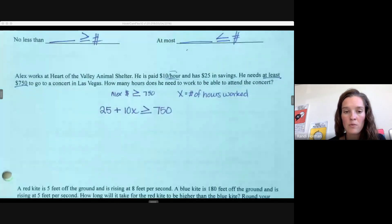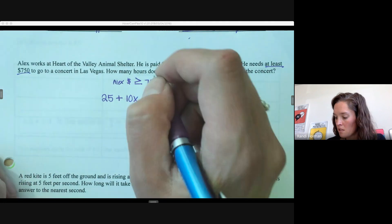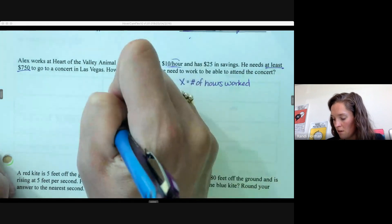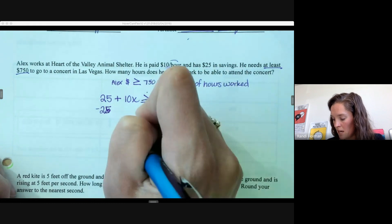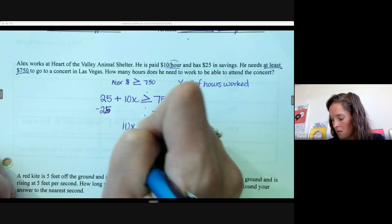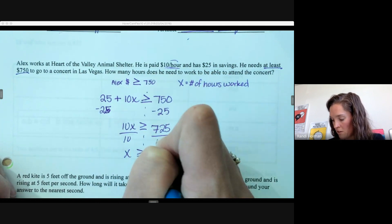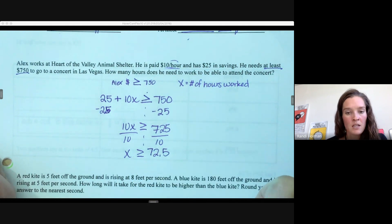Once we have our inequality, we're solving. Keep in mind solving inequalities is just like solving equations, except if we divide or multiply by a negative number, we have to flip that symbol around. Keep a nice balance—get your variable by itself. Subtract 25, so 10x has to be greater than or equal to 725. Divide by 10, so x has to be greater than or equal to 72.5.